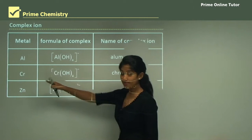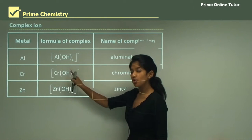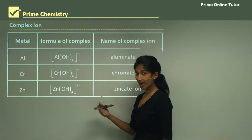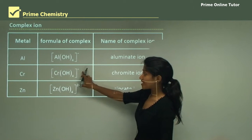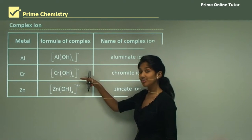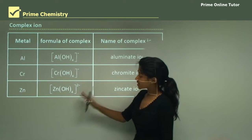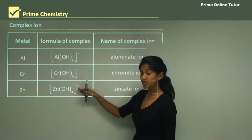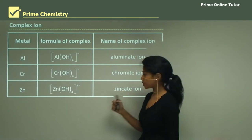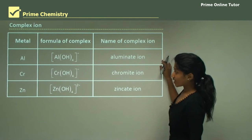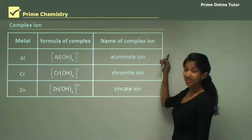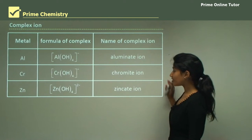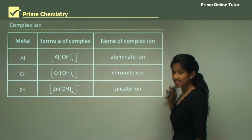Chromium's complex ion is Cr(OH)4 with a charge of minus 1 — this is an anion. Zinc also has a complex ion, but with a charge of minus 2. The complex ion for aluminium is called the aluminate ion, for chromium it is called the chromate ion, and for zinc it is called the zincate ion. You'll need these complex ions when writing chemical equations.